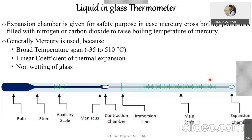The expansion chamber is used for safety purposes and is filled with nitrogen and carbon dioxide, which raises the boiling temperature of mercury if mercury is the filling liquid. Mercury is commonly used because of its advantages: a broad temperature span from -35°C to 510°C, a linear coefficient of thermal expansion over the entire temperature range, and non-wetting of glass.